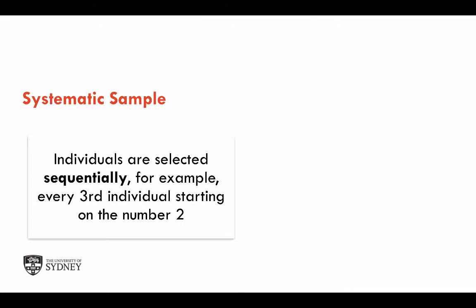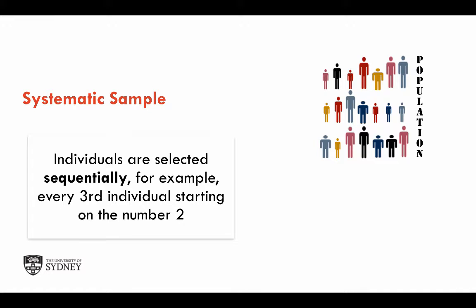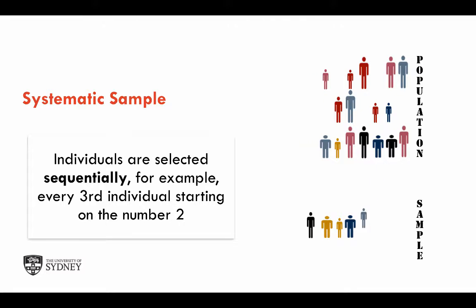In systematic sampling, as the name indicates, individuals are sequentially sampled from the population. For example, if we have the population indicated above, we can select every third individual starting with individual number 2. So it would be number 2, then number 5, then individual 8, and so on. We would obtain our systematic sample, in this case of size 7.